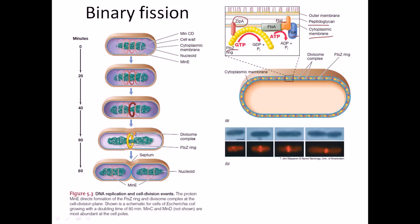Once ZipA is ready, it starts to recruit FtsZ proteins. The FtsZ proteins use the energy of GTP — GTP is hydrolyzed into GDP and inorganic phosphate — and FtsZ proteins attach one after another. When a new protein comes in, GTP is hydrolyzed to GDP and that protein is attached while the GDP leaves. In this way all those FtsZ proteins assemble one after another to form the FtsZ ring, which is complete around the 60 minute mark.